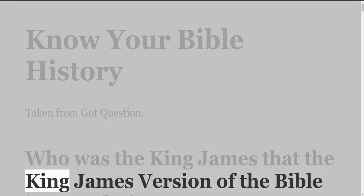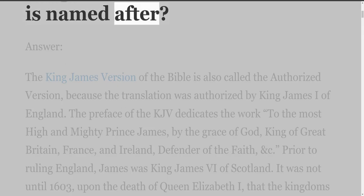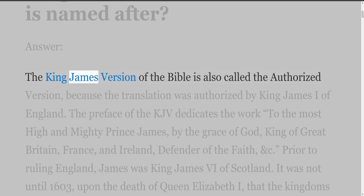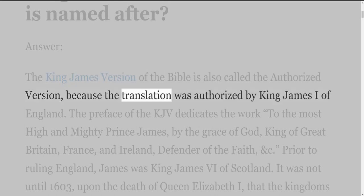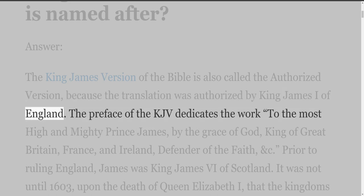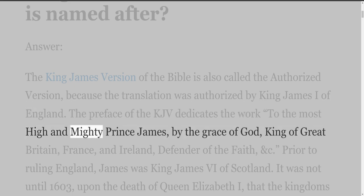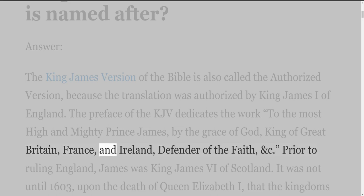Who was the King James that the King James Version of the Bible is named after? The King James Version of the Bible is also called the Authorized Version because the translation was authorized by King James the First of England. The preface of the KJV dedicates the work to the most high and mighty prince James, by the grace of God, King of Great Britain, France and Ireland, Defender of the Faith.